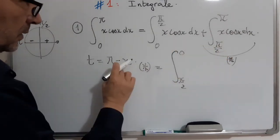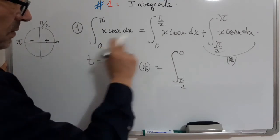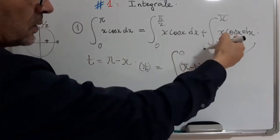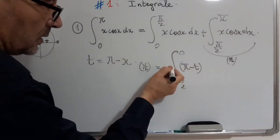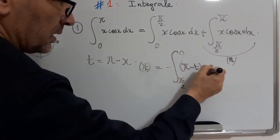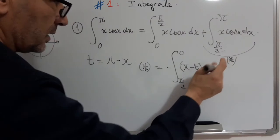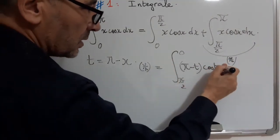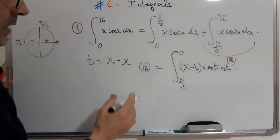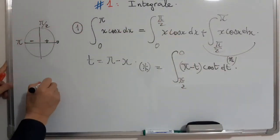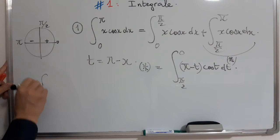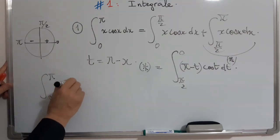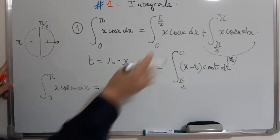Now, this integral became π over 2 to 0. And now, x equals π minus t, cosine minus cosine t, and minus dx equals dt. Now, the final calculation: the integral 0 to π x cos x dx will be equals.